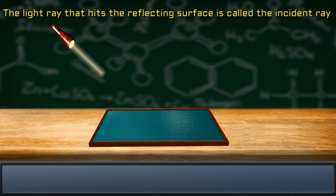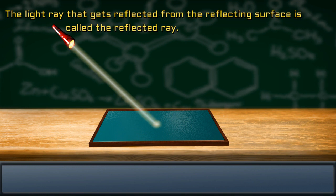The light ray that hits the reflecting surface is called the incident ray, and the light ray that gets reflected from the reflecting surface is called the reflected ray.